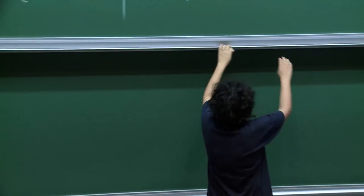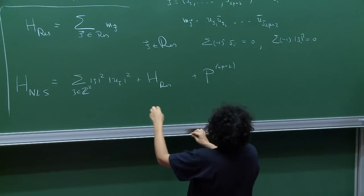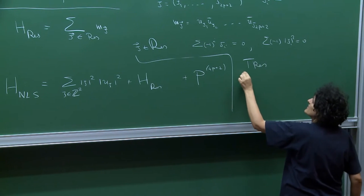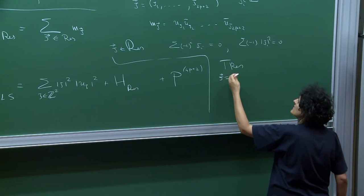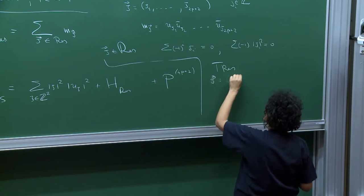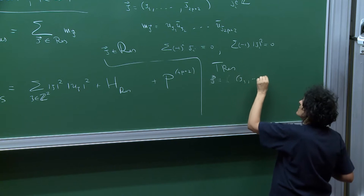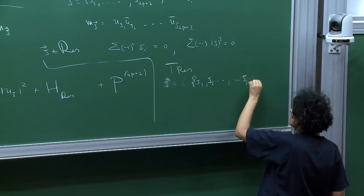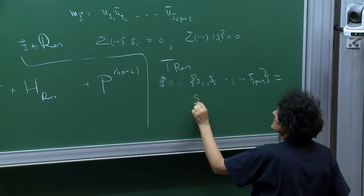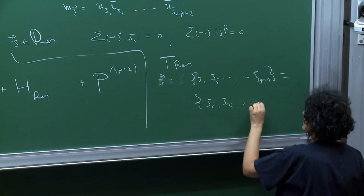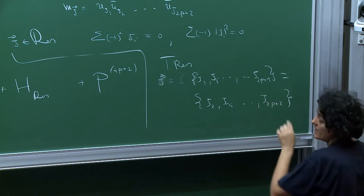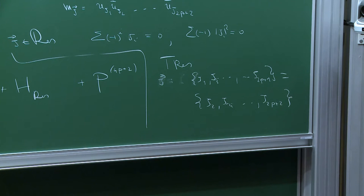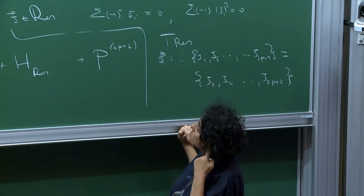Let me remind you of one last thing I forgot. Trivial resonances: a list such that the odd indexes up to j_{2p+1} coincide with the even indexes. This occurs for any dispersion law and I have to consider them as special.